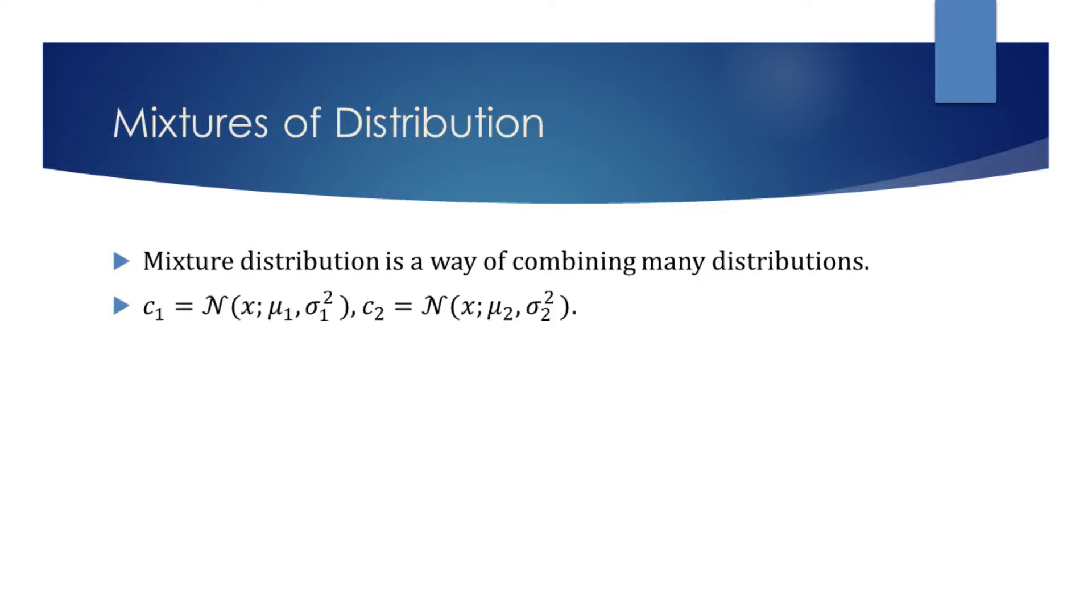The first component will be the Gaussian distribution with mean mu 1 and variance sigma 1 squared. The second component will also be the Gaussian distribution but with mean mu 2 and variance sigma 2 squared.